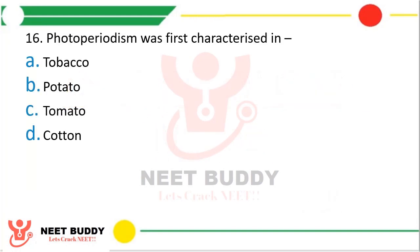Question 16. Photoperiodism was first characterized in which of the following: tobacco, potato, tomato, or cotton? The correct answer is option A — tobacco plant.